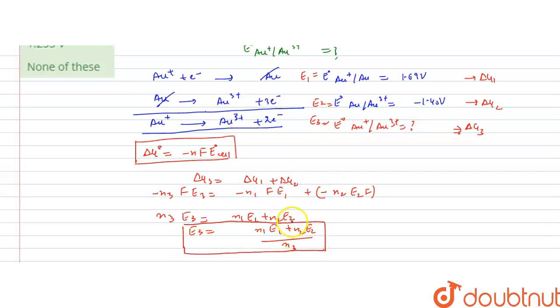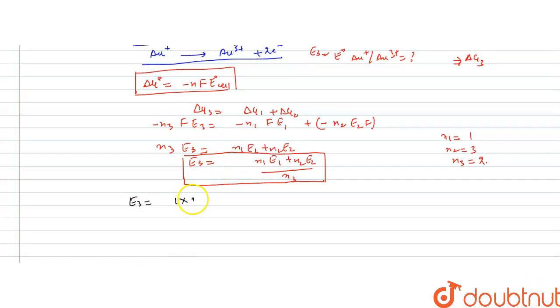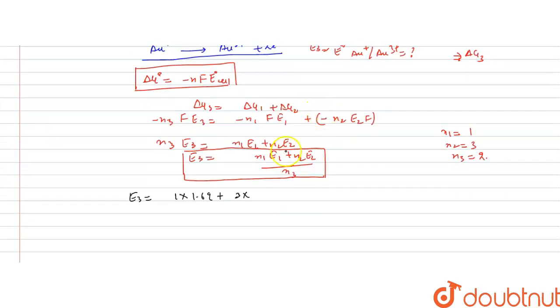This is the formula to calculate the electrode potential for the net reaction if the electrode potentials E1 and E2 are given for half cell reactions. We know that N1 equals 1, N2 equals 3, and N3 equals 2. We have to calculate E3. E1 value is 1.69 volt, N2 value is 3, and E2 value is minus 1.40, that is the oxidation potential, divided by N3 that is 2. This will give us 1.69 minus 4.2 divided by 2.